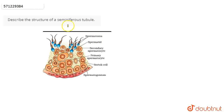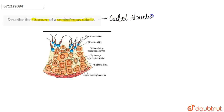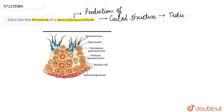In this question, we are asked to describe the structure of a seminiferous tubule. So first we will discuss what a seminiferous tubule is. These are highly coiled structures that are basically found in the testis. It is the region where the production of sperm occurs. Production of sperm takes place, so let's discuss the sectional view or the diagram of the seminiferous tubule.